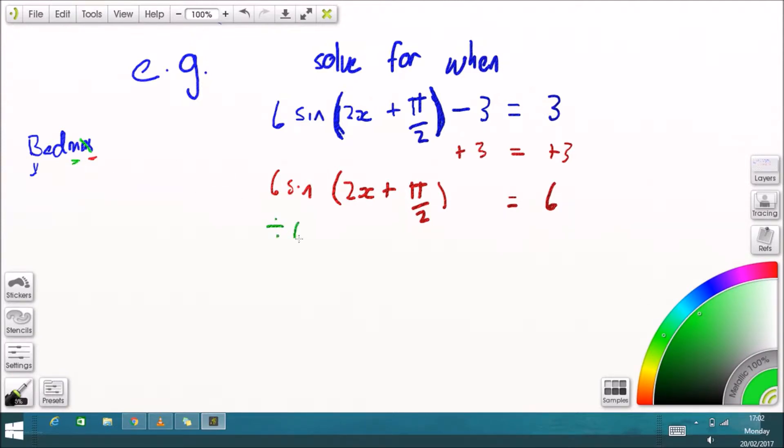Now the next thing that's happening outside the brackets is a multiply by 6, so the opposite of that is divide by 6. So if we divide both sides by 6, that leaves us with sine of everything inside the brackets equals 1.